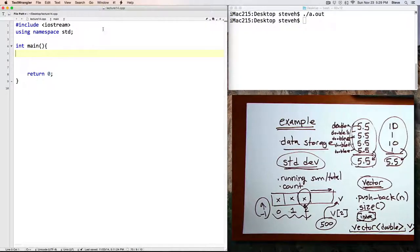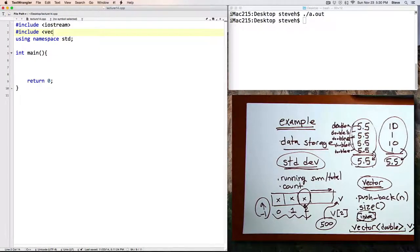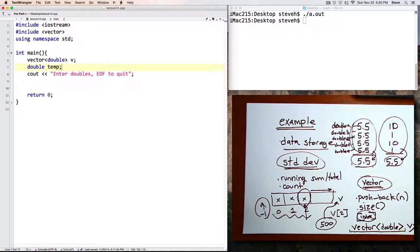Let's switch to our program now and code a program that works with the standard deviation. Okay, here I've got a starter program called lecture14.cpp, and I've compiled it and tested it just once to make sure it doesn't do anything. Now, in order to use vectors in your program, you need to pound include vector. So I'll do that first. And now I would like to declare a vector. And to make it match my example on paper, I'll call it v.